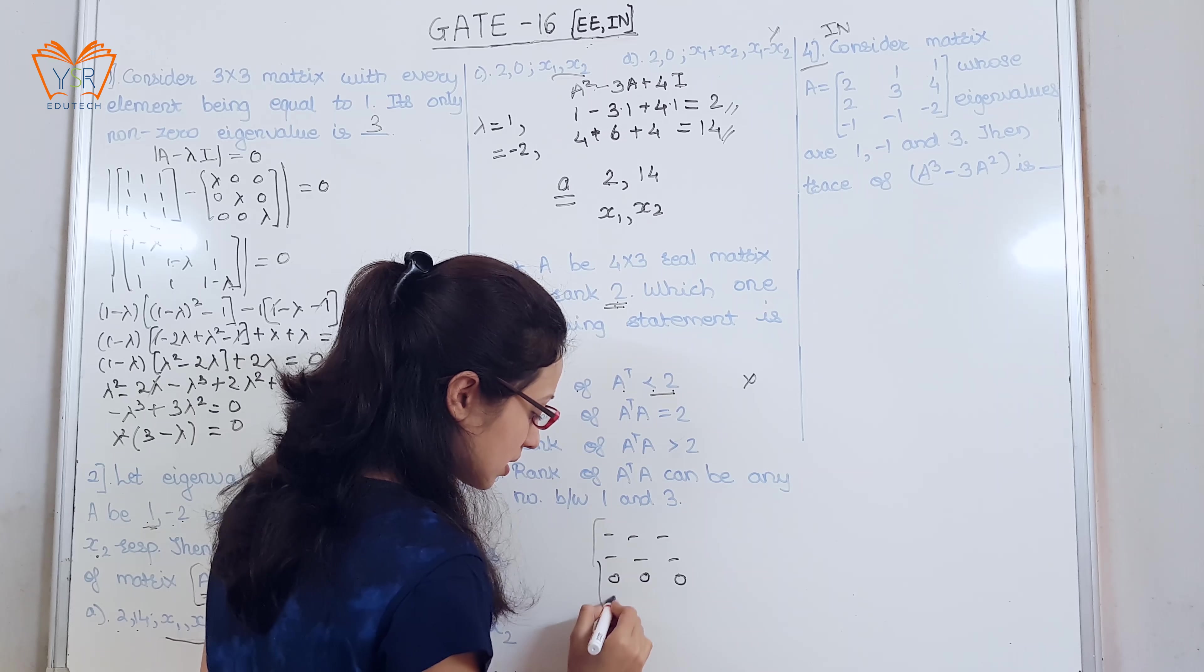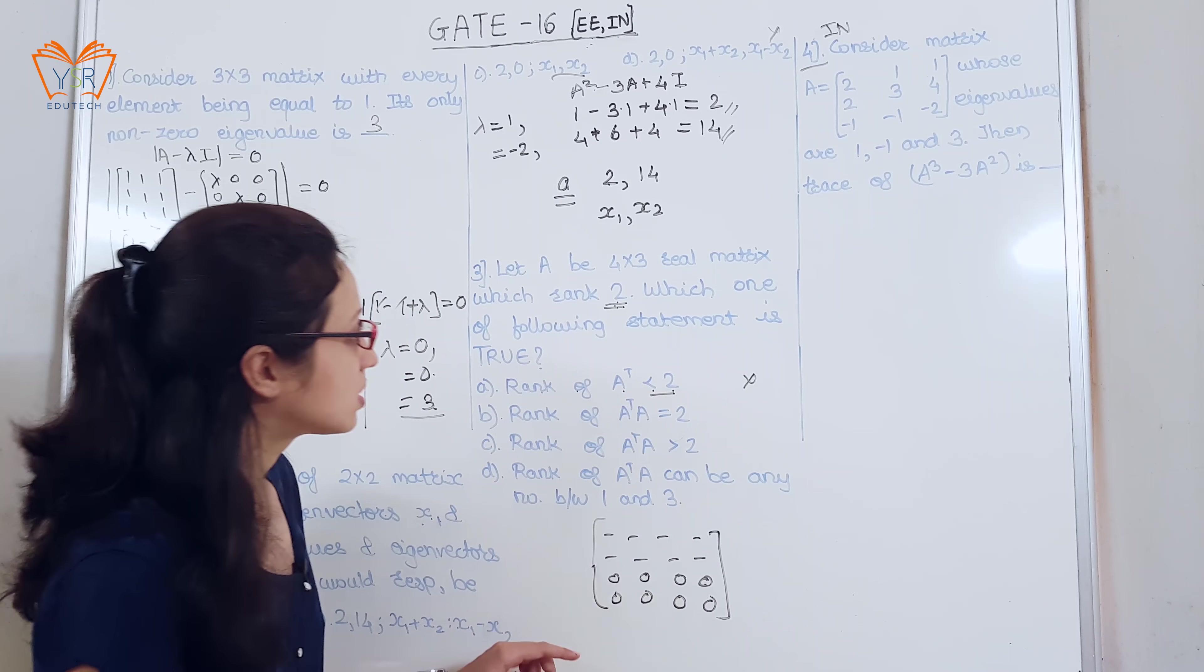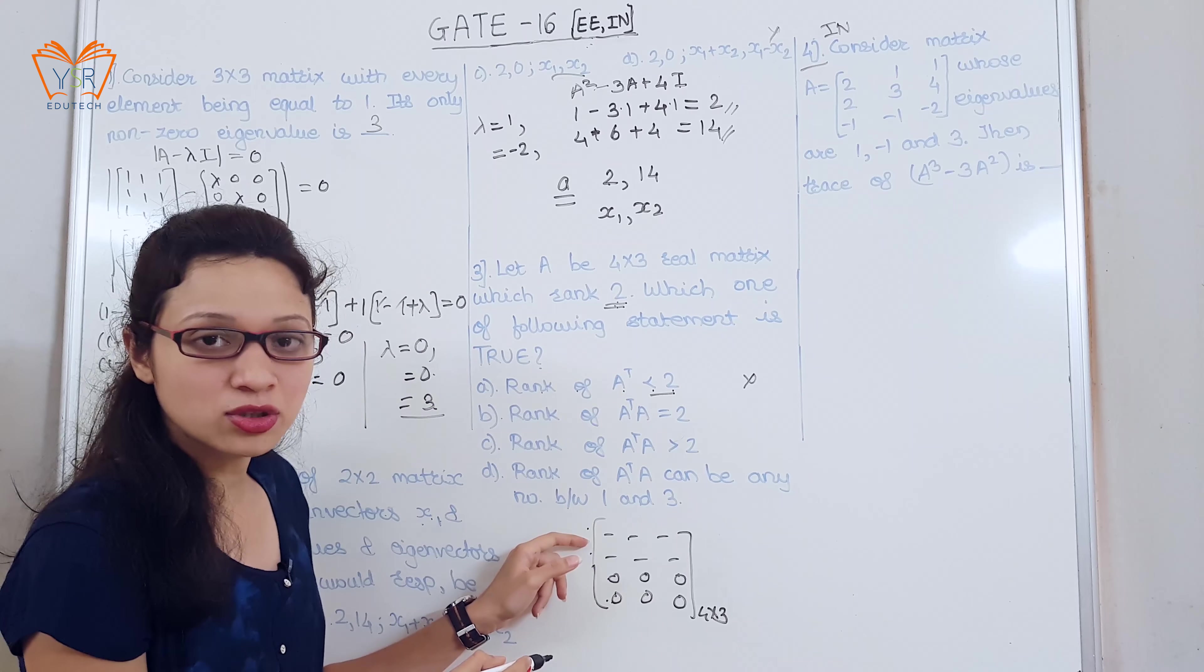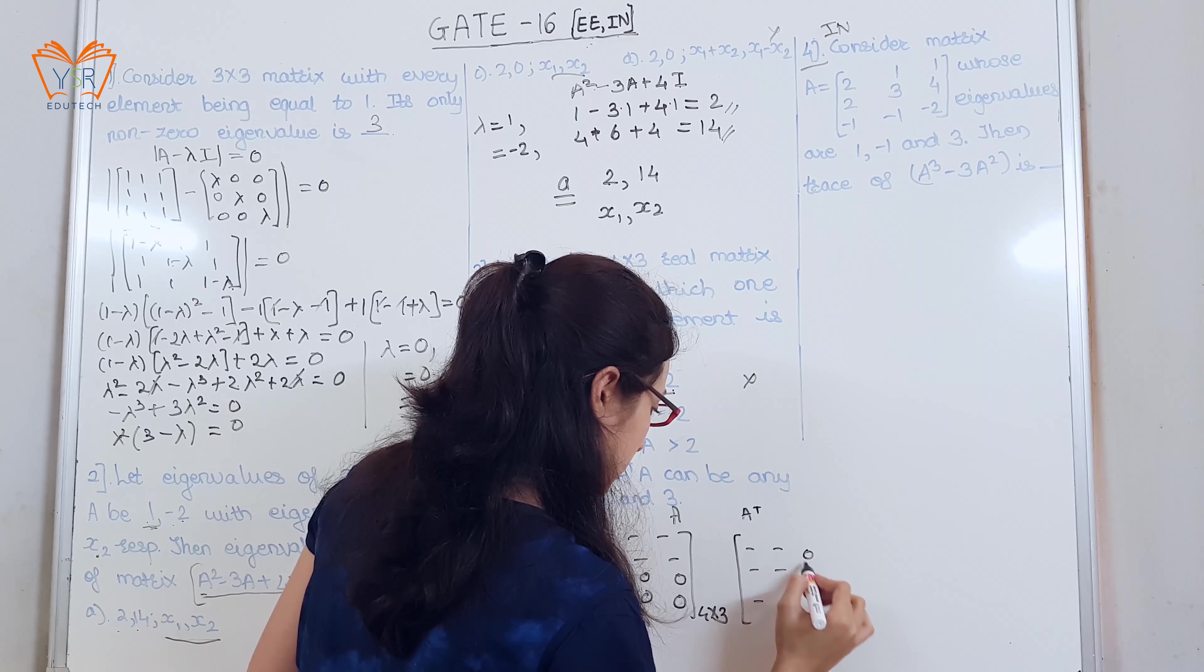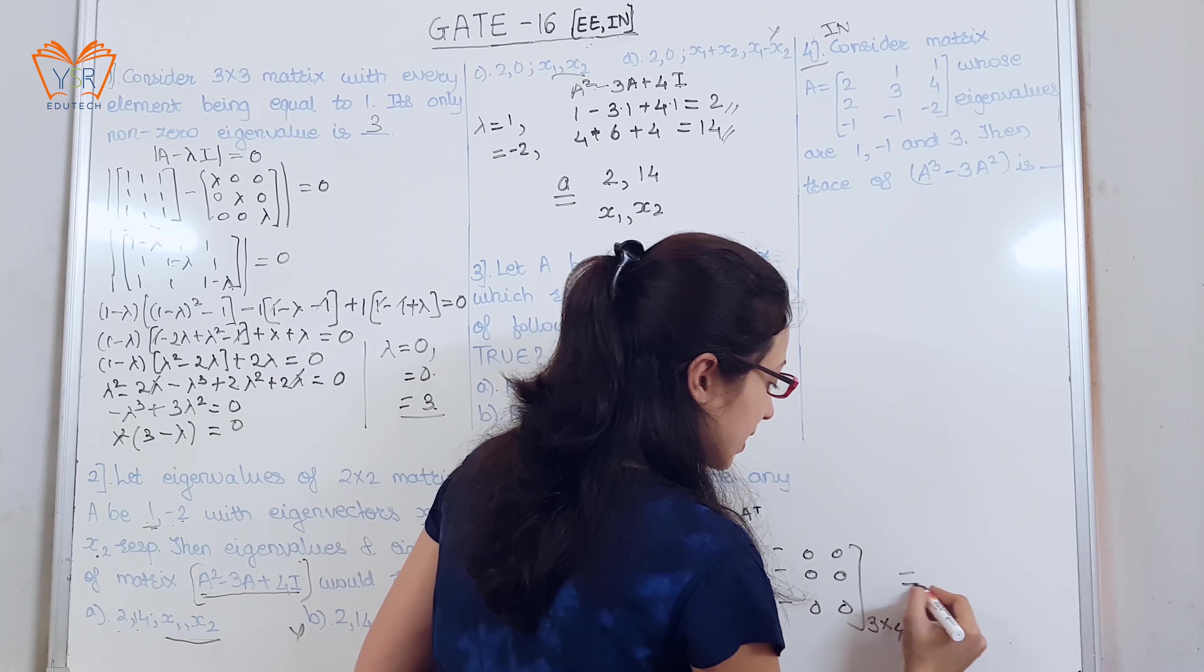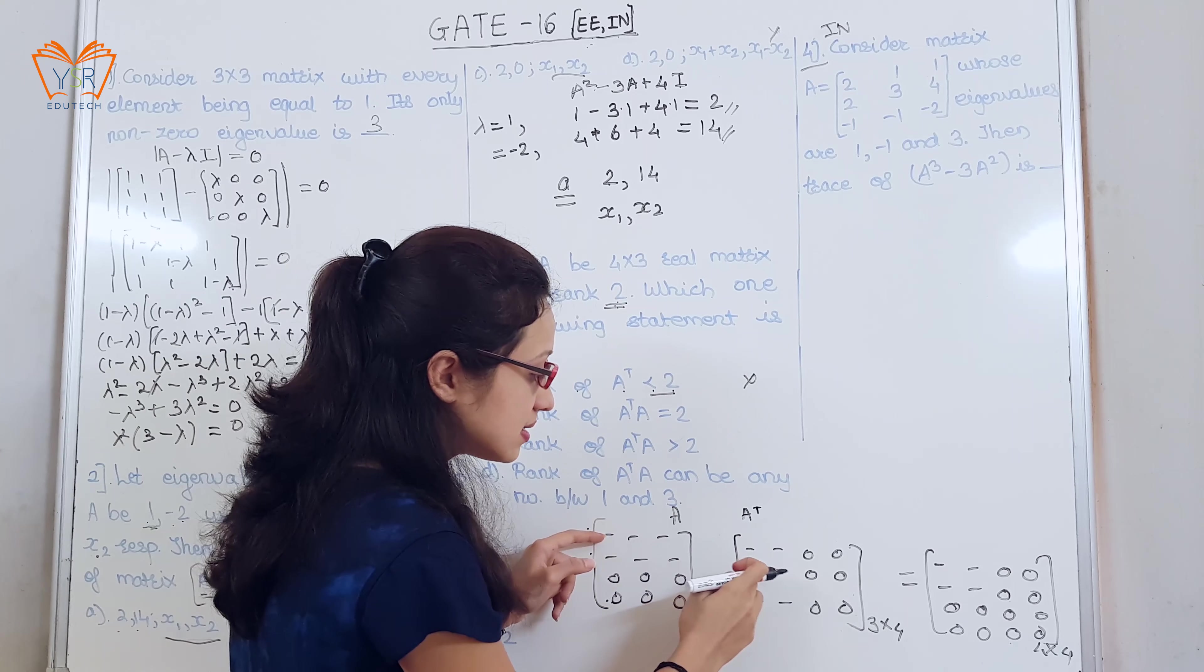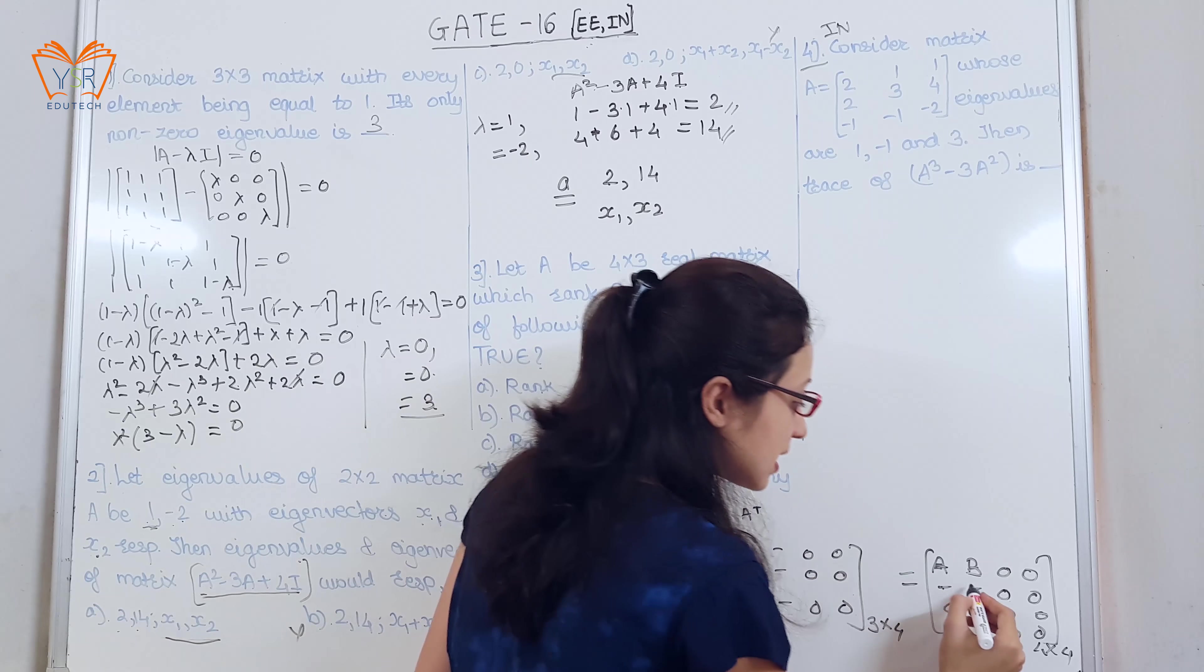Suppose this is a 4 by 3 matrix with elements equal to 1. Why these two rows are 0? Because rank of this matrix is 2. These two are linearly independent rows. So, this is suppose A, now A transpose will be 3 into 4. Since this size of A is 4 into 3, size of A transpose will be 3 into 4. The resulting matrix will be 4 into 4 size. Now, if you multiply these elements with these whatever are the values here. Suppose we get A here, B here.